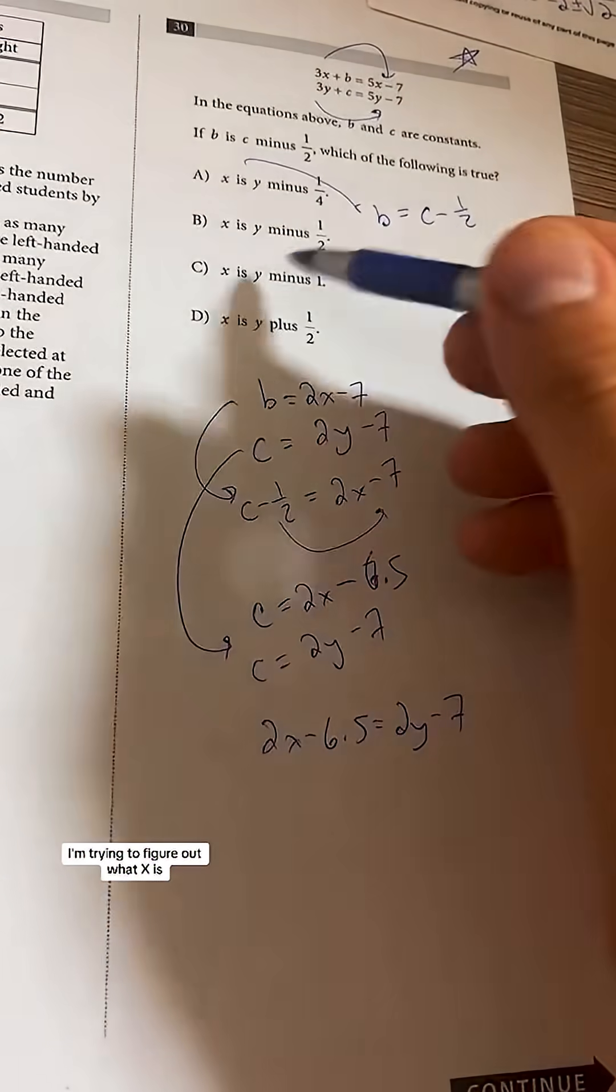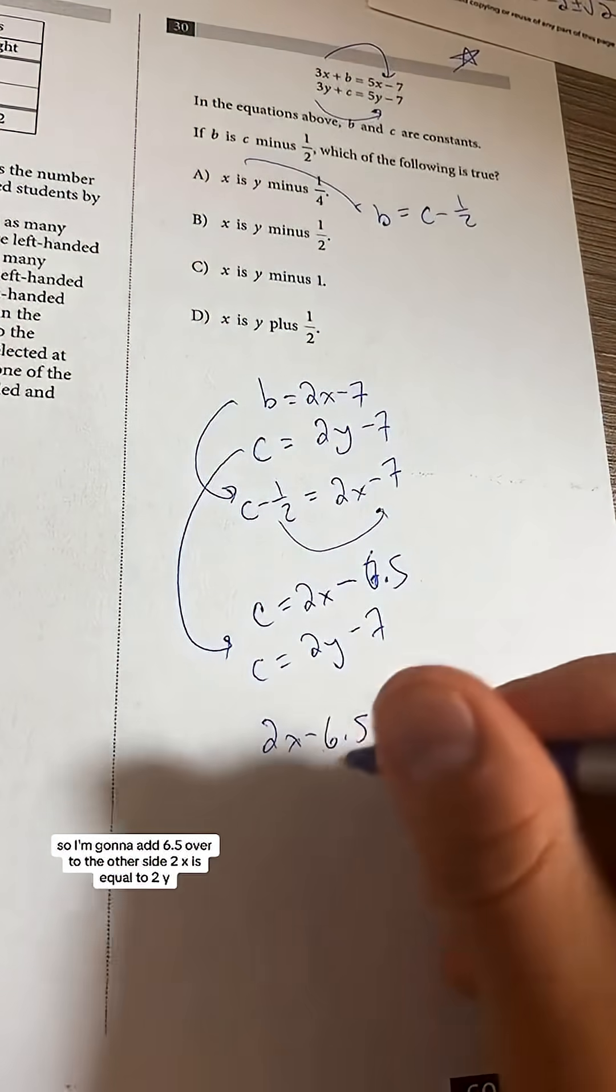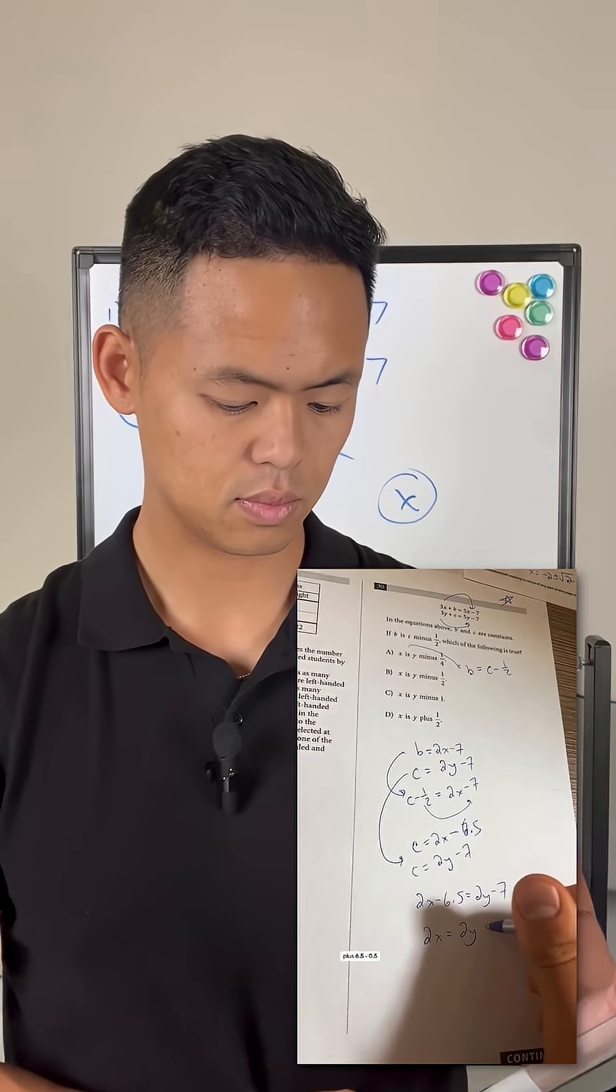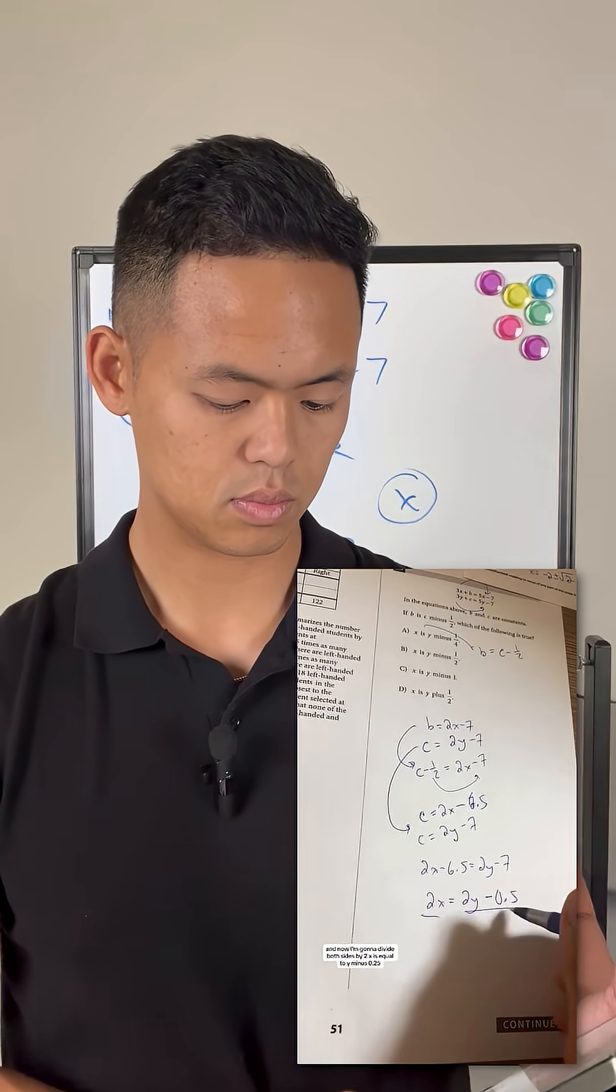I'm trying to figure out what x is, right? All my answers of x is. So I'm going to add 6.5 over to the other side. 2x is equal to 2y plus 6.5 minus 0.5. And now I'm going to divide both sides by 2.